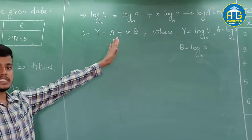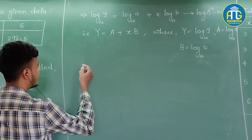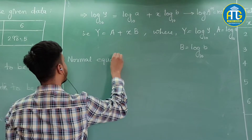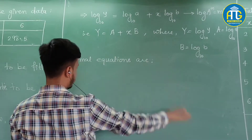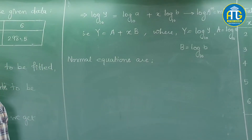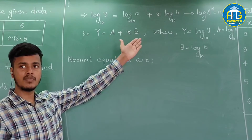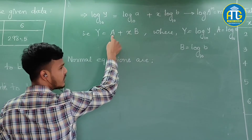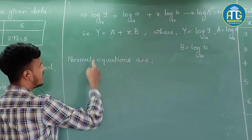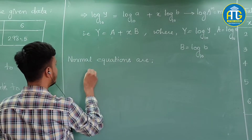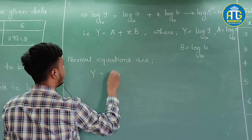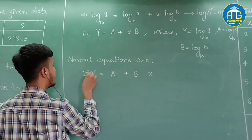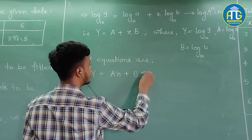Now we need to write down the normal equations. How many normal equations? Two — because we have two constants, A and B. The coefficient of A is 1, the coefficient of B is x. Multiplying by 1 and taking summation gives the first normal equation: ΣY = nA + B·Σx. This is equation 2.